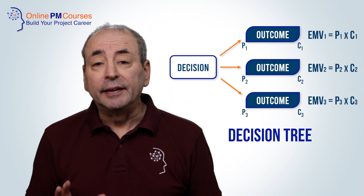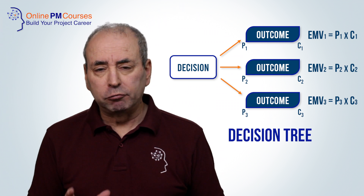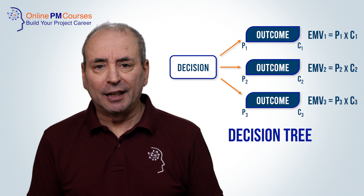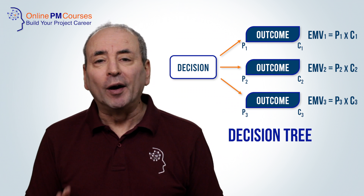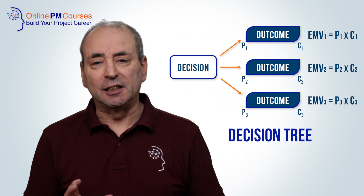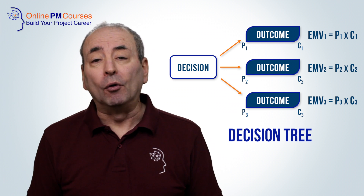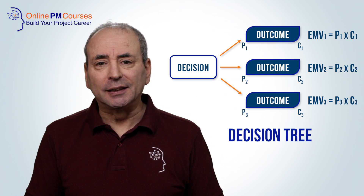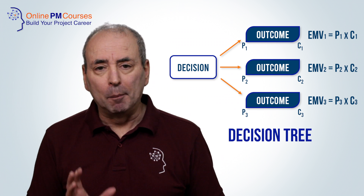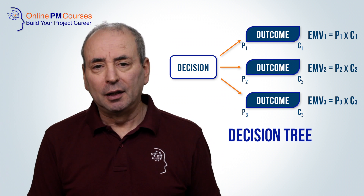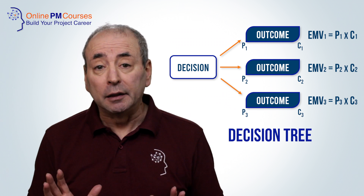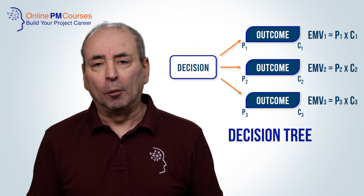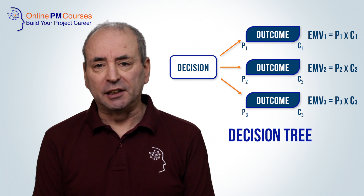If the event is a decision, then what we have is a decision tree. Here the EMVs represent the expected monetary values for each decision option, and therefore the option with the highest expected monetary value is likely to be the best option for your decision.